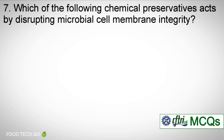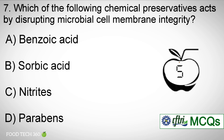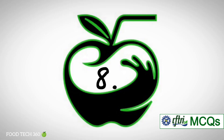Question number 7. Which of the following chemical preservatives acts by disrupting microbial cell membrane integrity? Options: A. Benzoic acid, B. Sorbic acid, C. Nitrites, D. Parabens. Correct answer: D. Parabens.